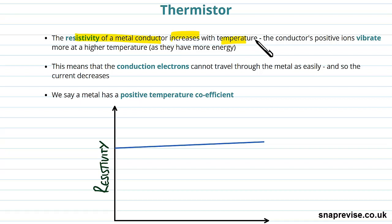We saw that with superconductivity — below a certain temperature, your critical temperature, you actually had no resistance whatsoever, and then your resistivity just increased past that critical point. It went from being zero below the critical point and then just increased with temperature, getting higher and higher as temperature increased.